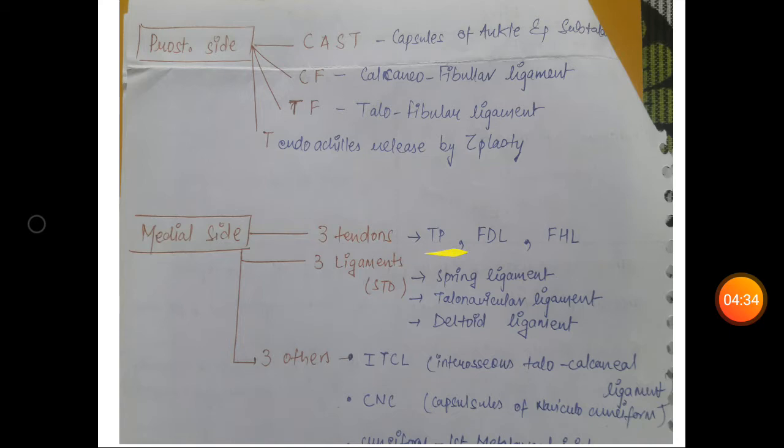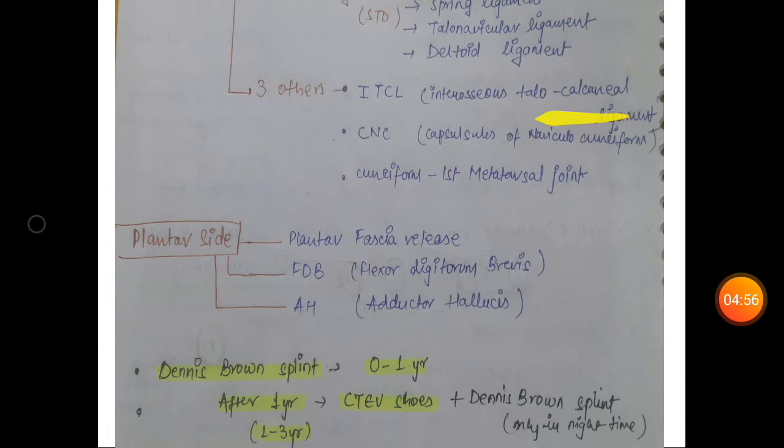On the medial side, release three tendons: tibialis posterior, flexor digitorum longus, and flexor hallucis longus. Three ligaments—STD mnemonic: spring ligament, talonavicular ligament, and deltoid ligament. Three other structures: interosseous talocalcaneal ligament, capsules of naviculocuneiform and cuneiform first metatarsal joint. On the plantar side, release plantar fascia, flexor digitorum brevis, and abductor hallucis.